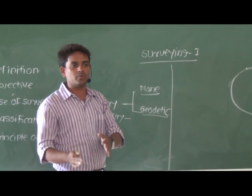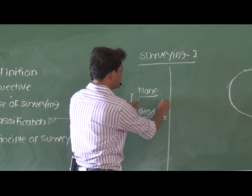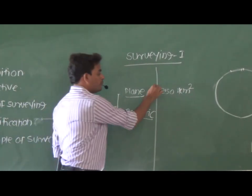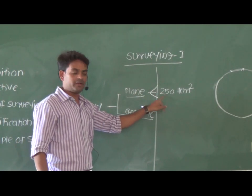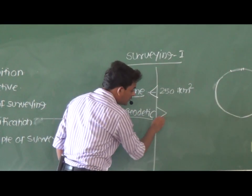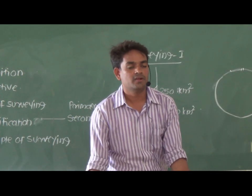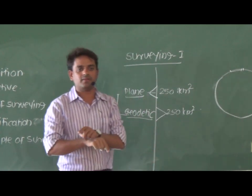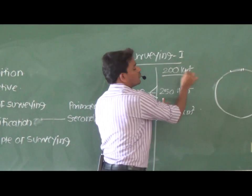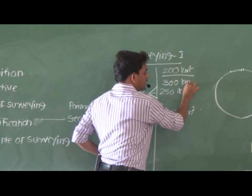How do you decide whether to carry out plane surveying or geodetic surveying? When the area is less than 250 km², that surveying is called plane surveying. And when the area is greater than 250 km², that surveying is called geodetic surveying. For example, if you want to survey an area of 200 km², you use plane surveying. And if the area is 300 km², you use geodetic surveying.